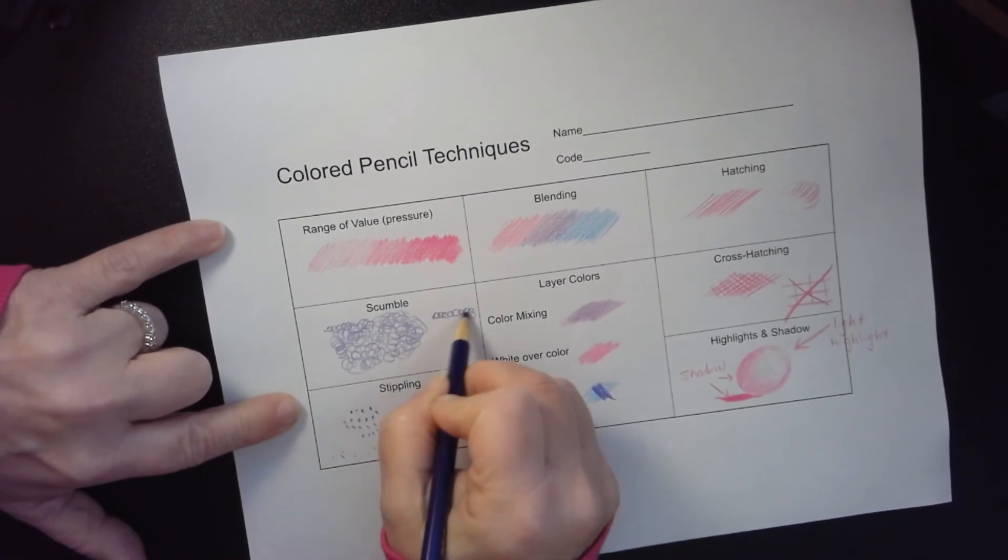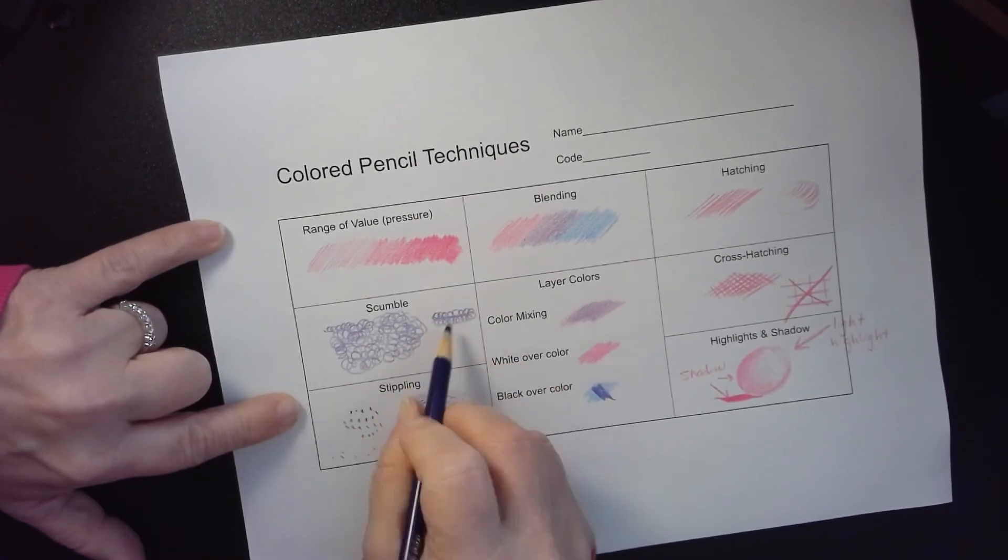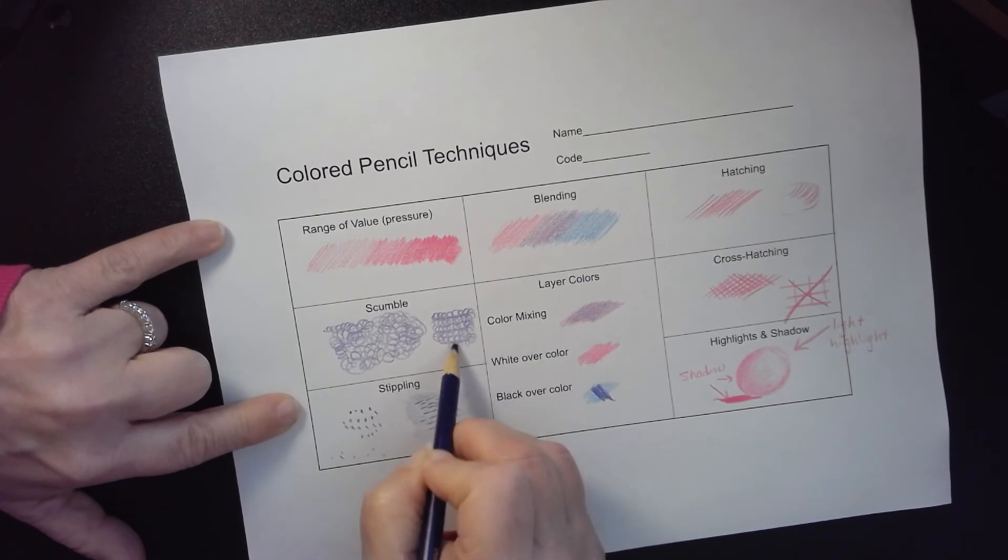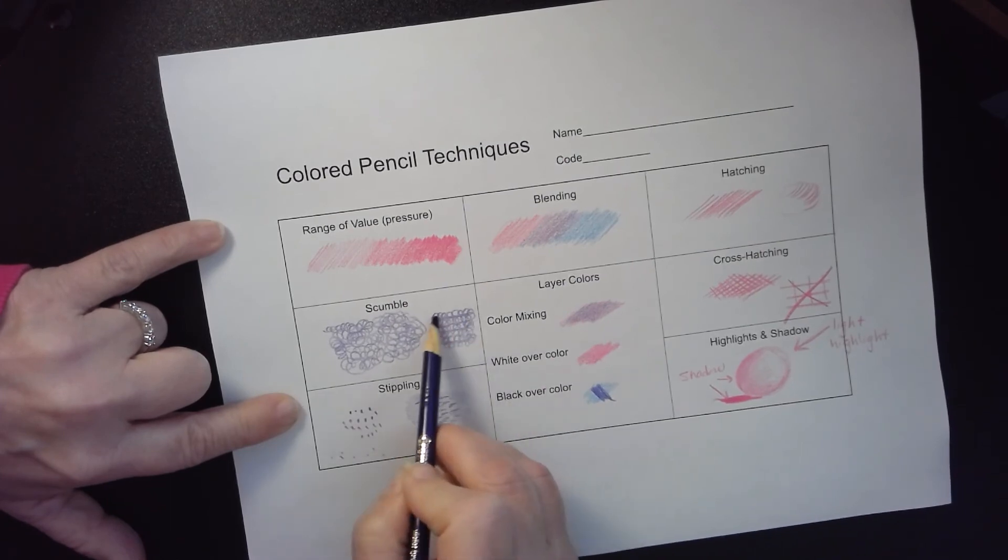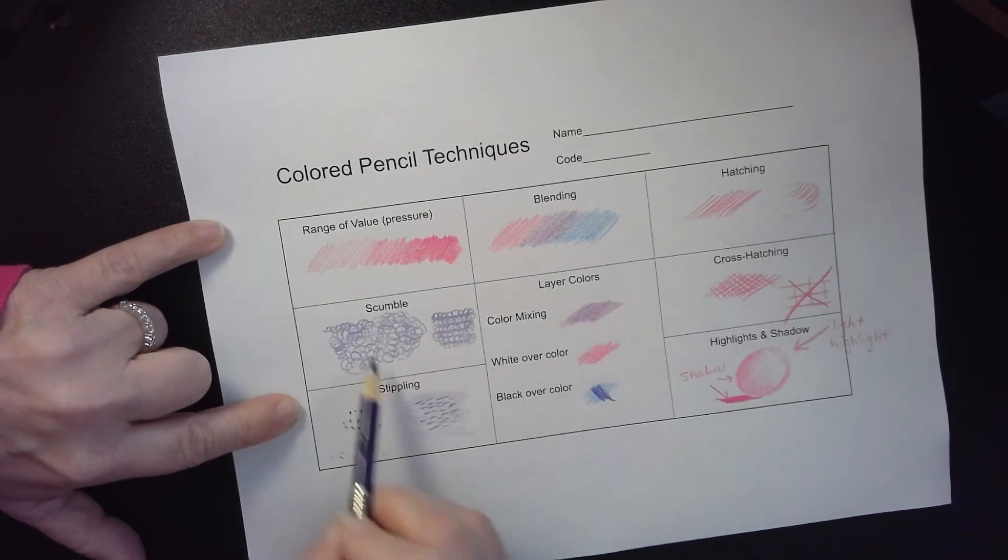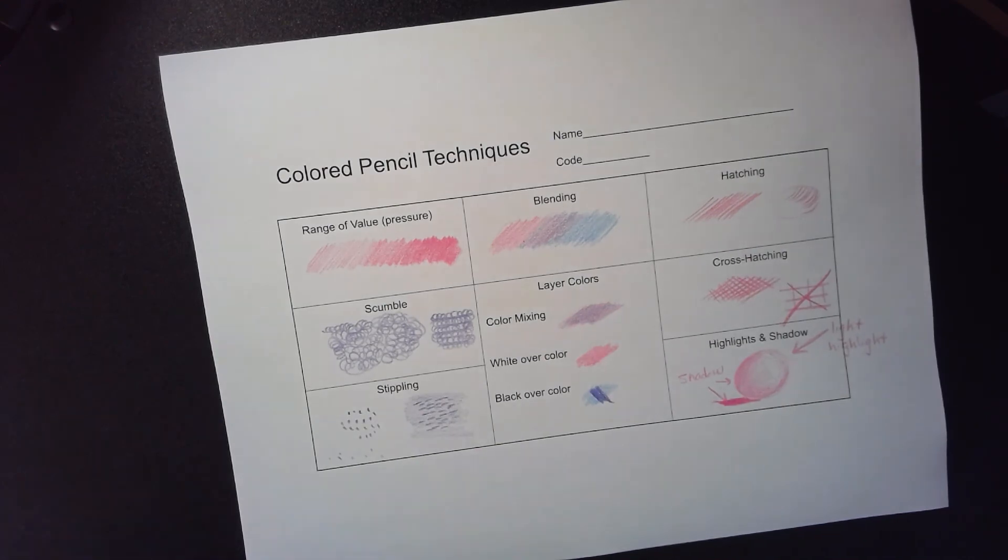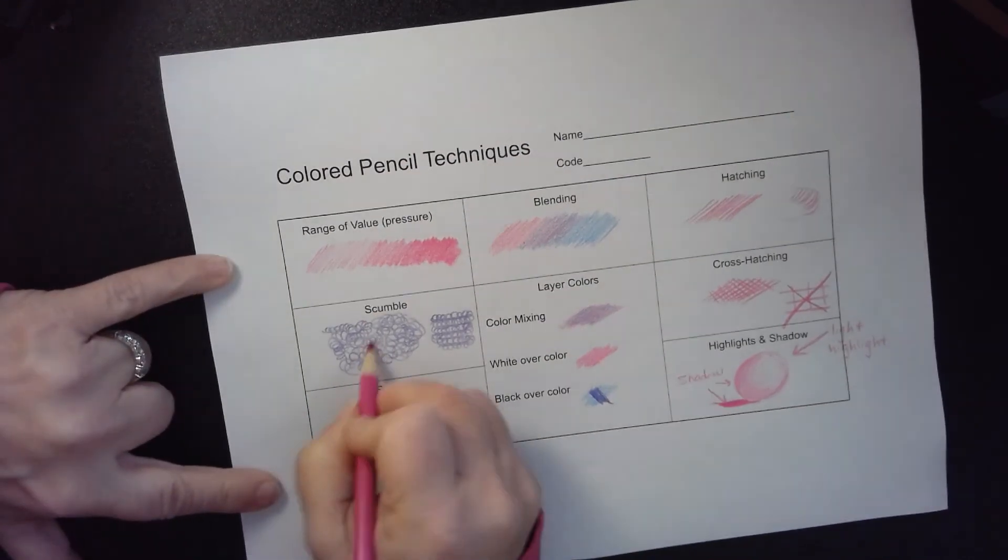And you want to keep changing the direction that you're going because if you don't, if you always go in the same direction where your circles overlap each other, you're going to start to get a line. I don't know if you can see those lines there, but I'm starting to get darker lines here between each of my lines of color. So you want to keep it random so you don't get that.